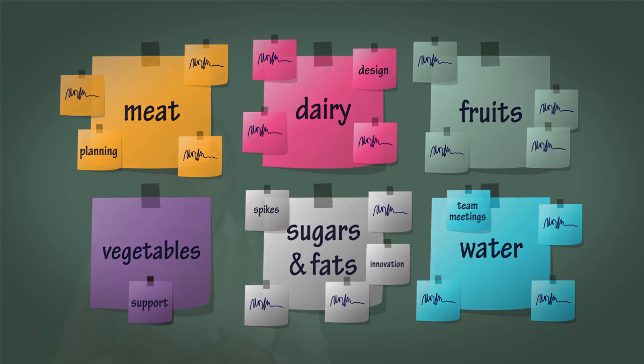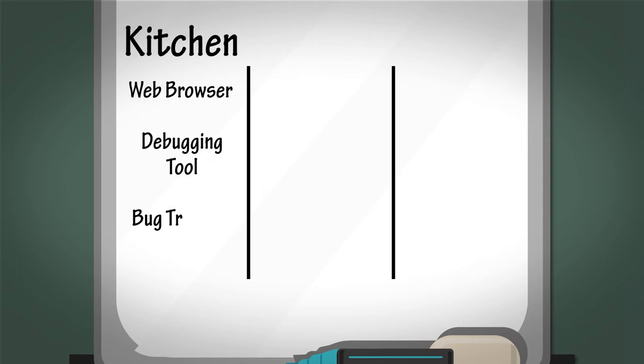Explain that we're going to now explore the recipe we use for each of the items of work. Split a flip chart into three columns. In the first column, write the word kitchen. Here we're going to ask the team what the environment they're using is, what tools or utensils we're using to help us do our work. In the second column, write the word ingredients.